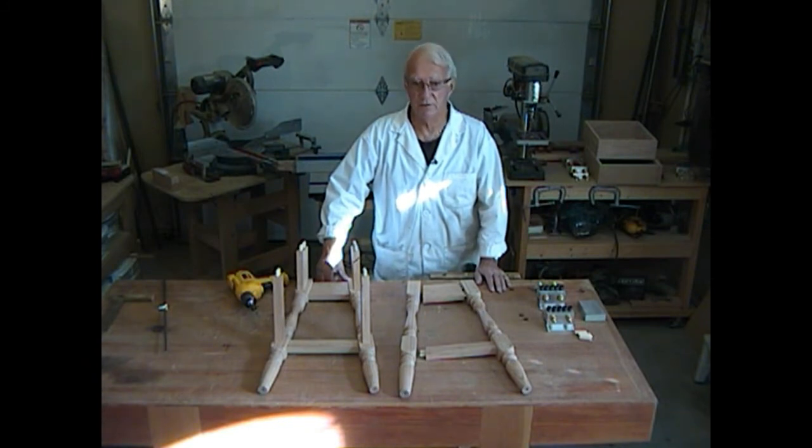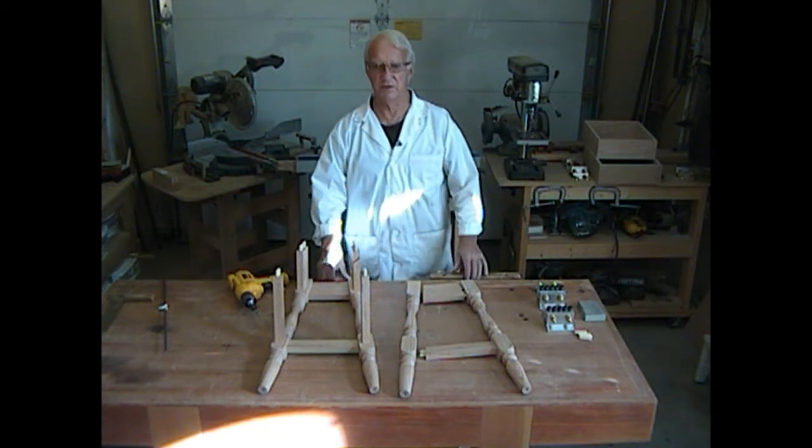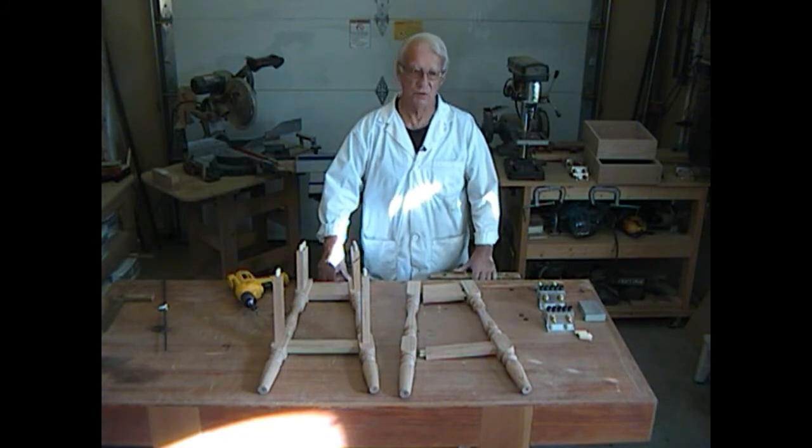I'll demonstrate the upper rail joint which is basically a 7 eighth by 3.5 inch rail into a 1.75 by 1.75 turned leg. Both ends of the rail are cut at a 6 degree angle and the dowels will automatically align at 6 degrees to the horizontal axis of the rail.